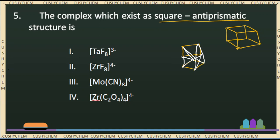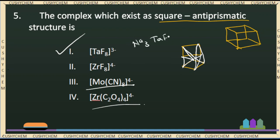If we look at this structure, we will look at TaF8^3- which is the antiprismatic structure. We also look at TaF8^2- and ZrF8^3- which is a bicapped trigonal prismatic structure. If we look at the Mo complex, we have a dodecahydro structure, and zirconium oxalate has a bicapped trigonal prismatic structure with a pseudo-square structure. So TaF8^3- is the right answer.